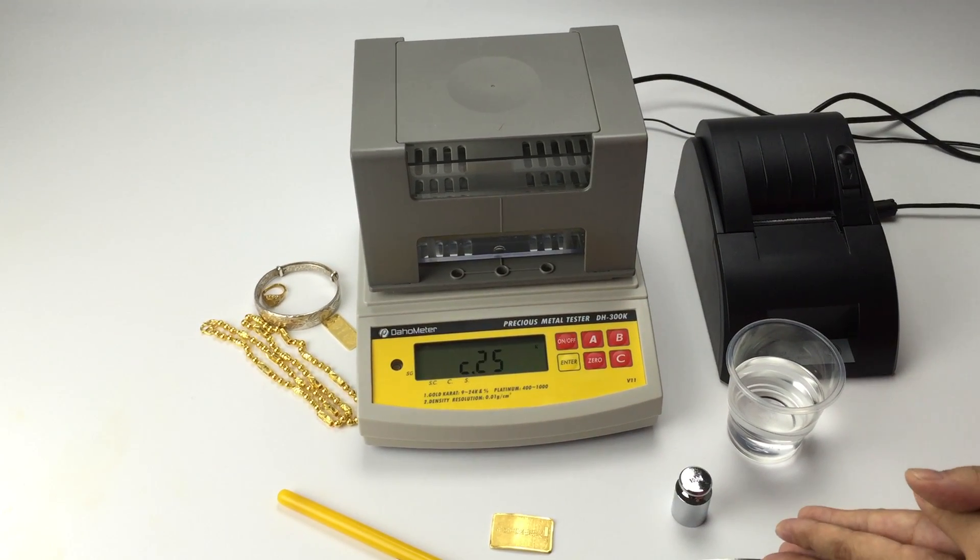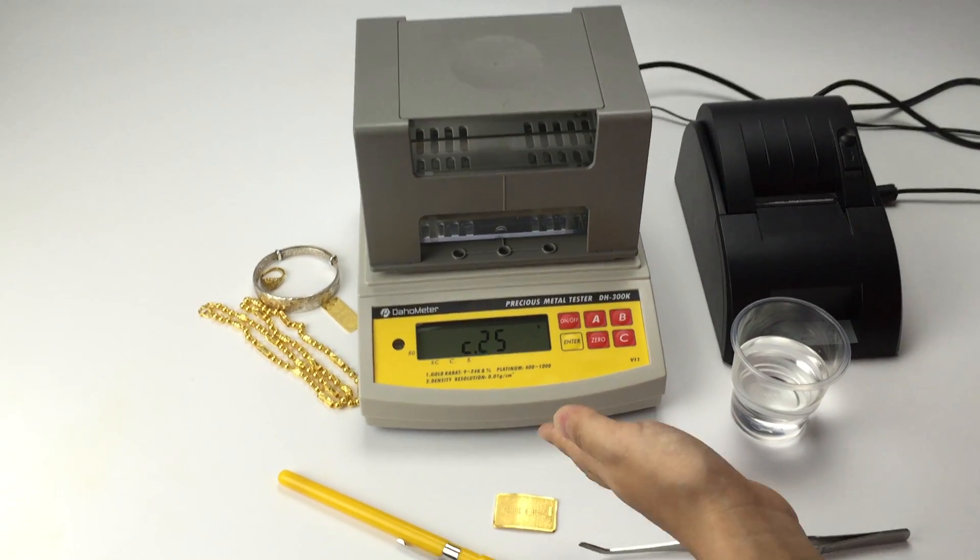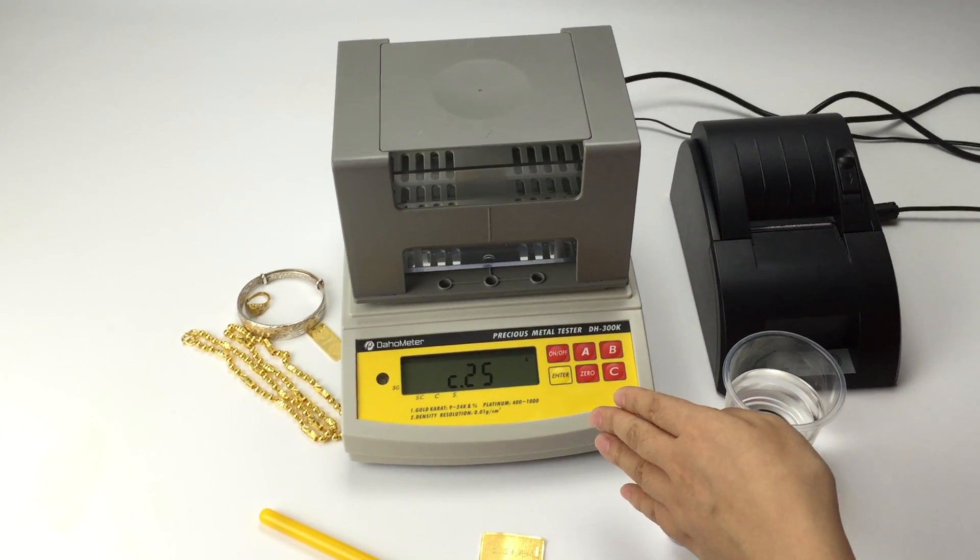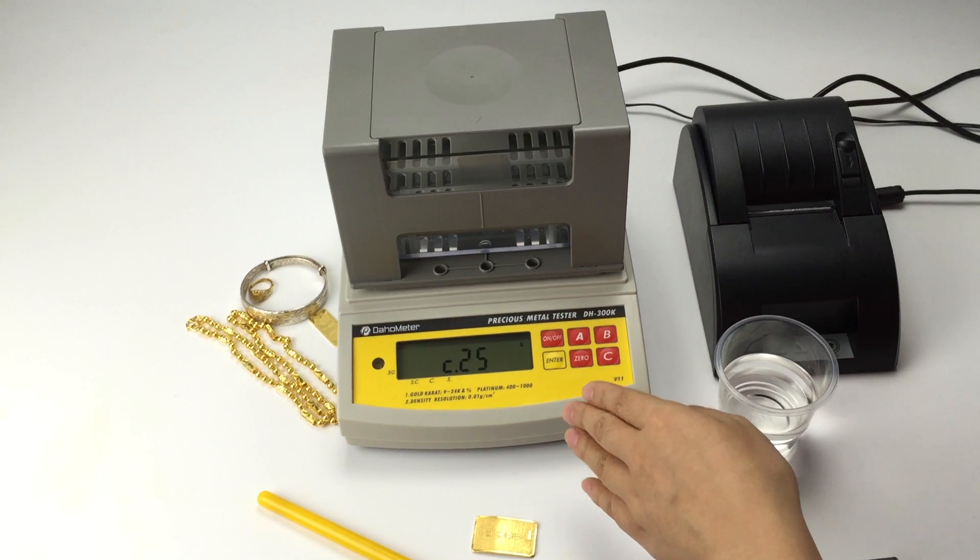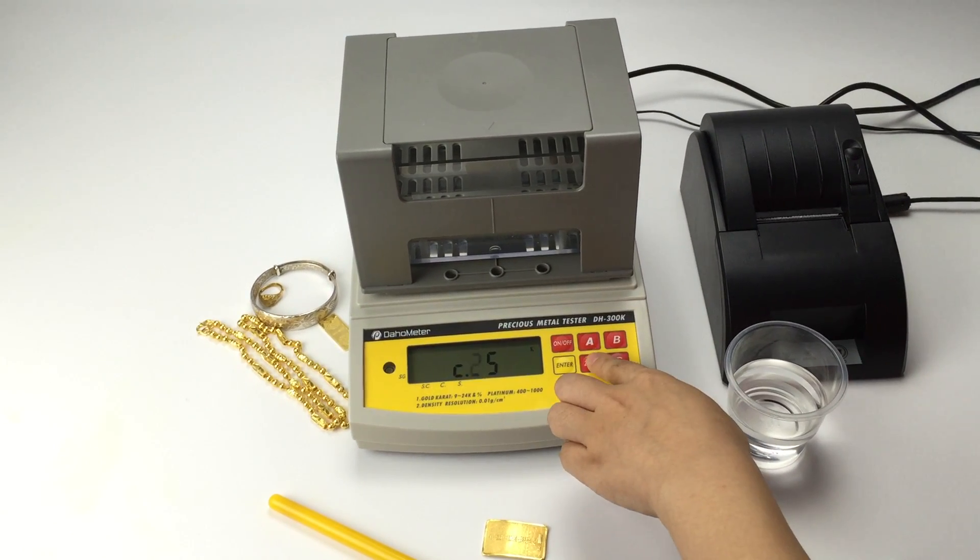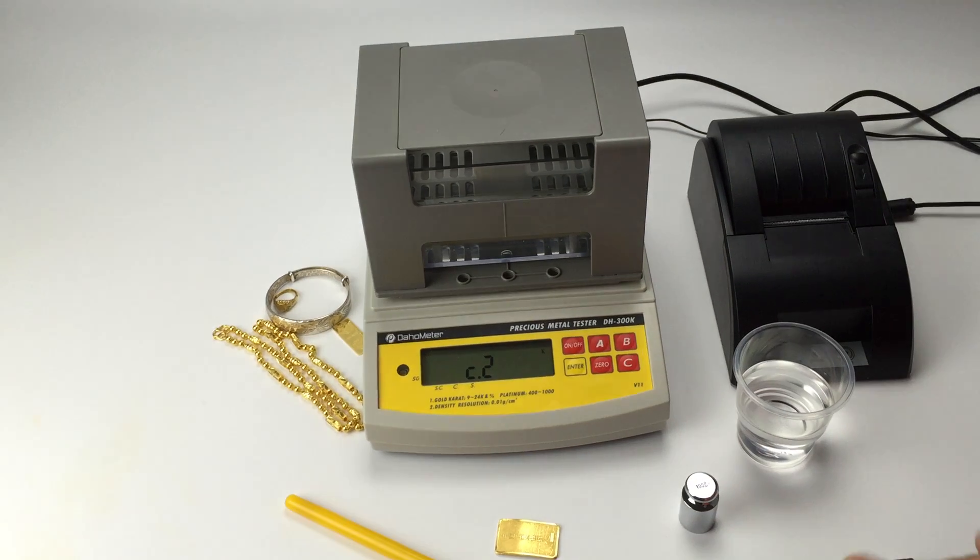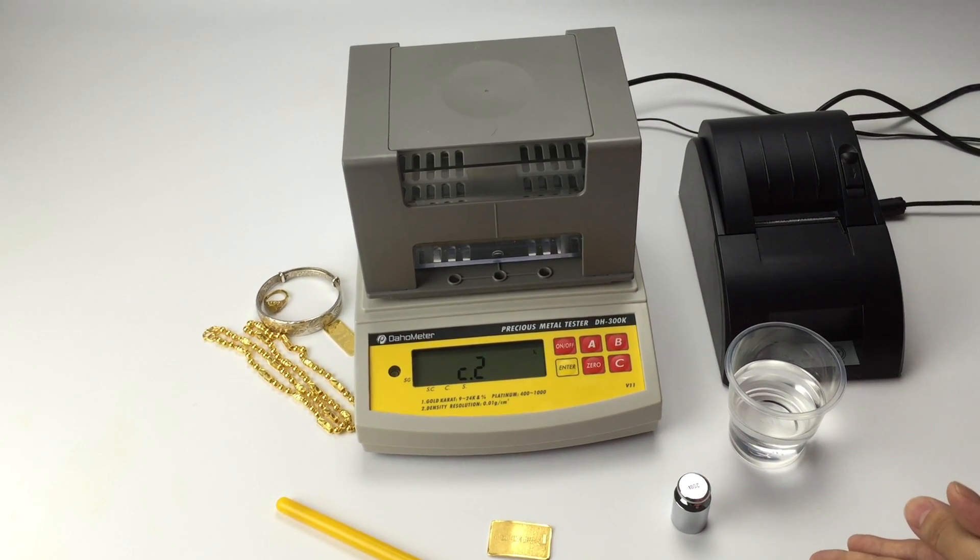Now we will change 25 to 27. Press A to change number. Press 0 to shift. Then press ENTER to confirm.